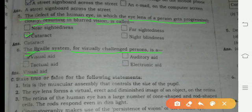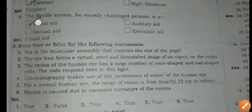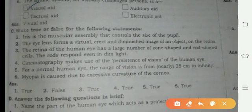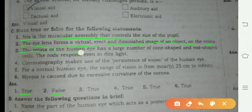Part C: First one, Iris is the muscular assembly that controls the size of the pupil. Yes, this is true. Second, the eye lens forms a virtual erect diminished image of the object on the retina. That is false. Retina of the human eye has a large number of cone-shaped and rod-shaped cells. The rods respond even in dim light. Yes, this is true.